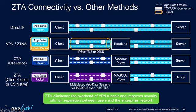Let's double-click on what this actually looks like — a comparison of ZTNA connectivity versus other methods. At the top, you have a direct IP connection: a client and a server, where each application data stream produces its own individual TCP or UDP connection. For most VPN and ZTNA implementations, you insert a VPN or ZTNA headend and wrap the application packet inside a tunnel packet. The device still has an IP address on the network, still makes an end-to-end connection, and the headend strips off the outer IPsec/TLS/DTLS packet and forwards the inner packet to the server.